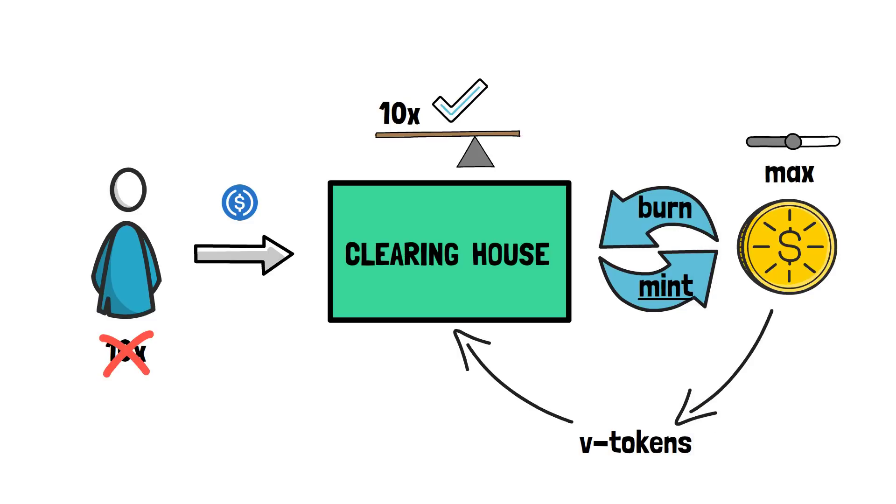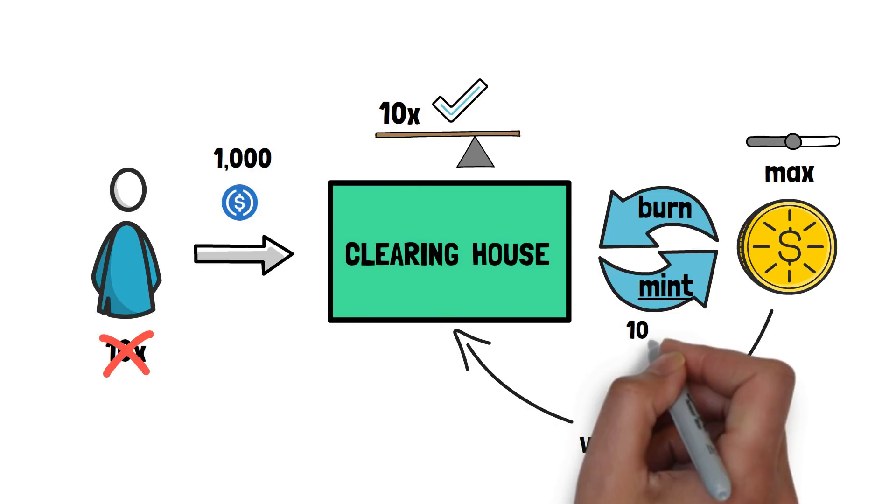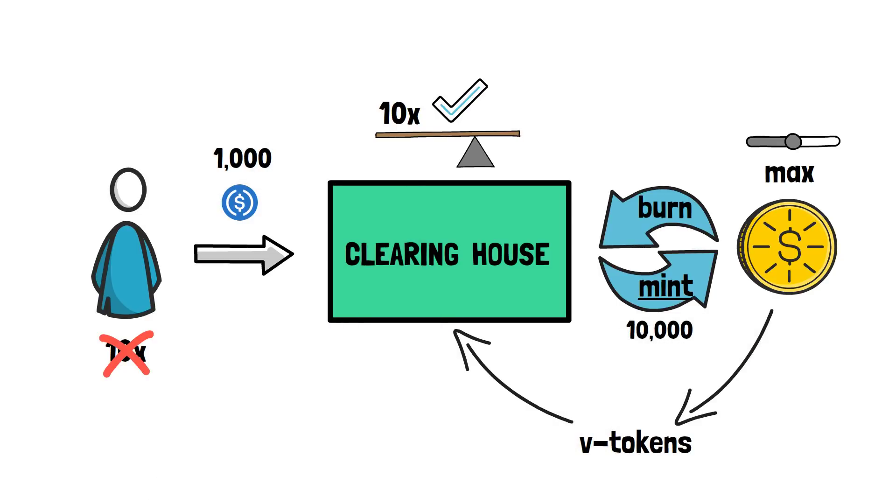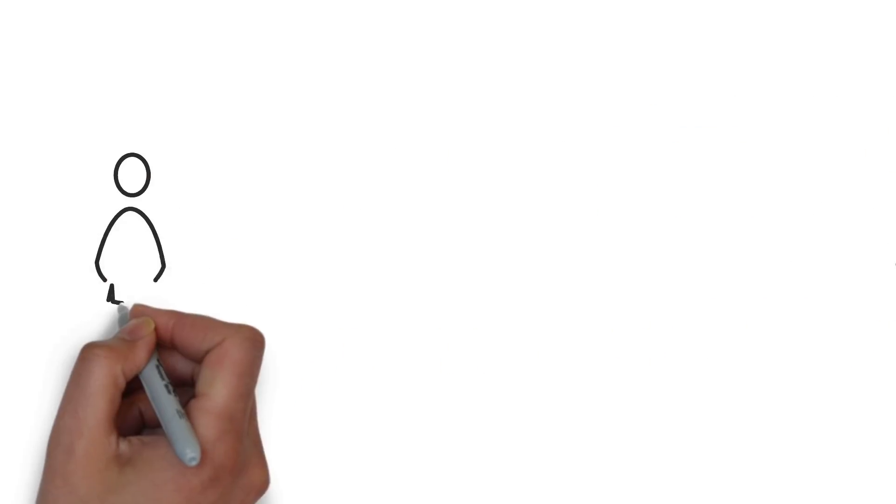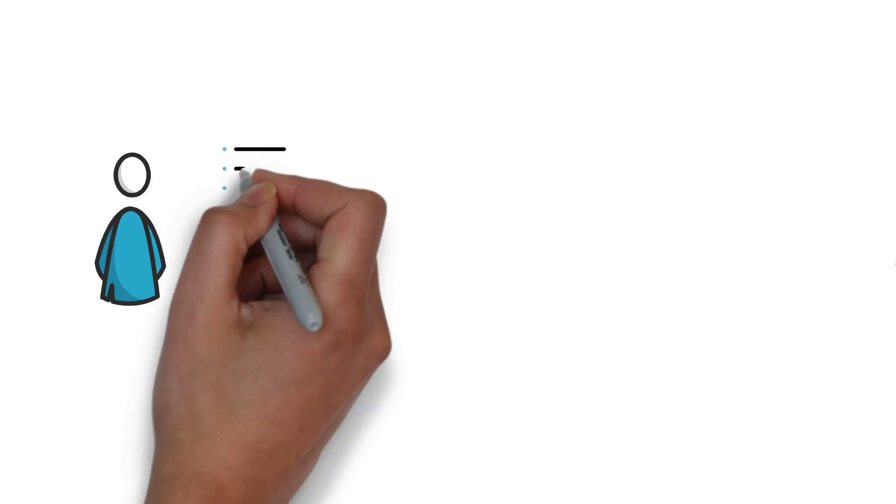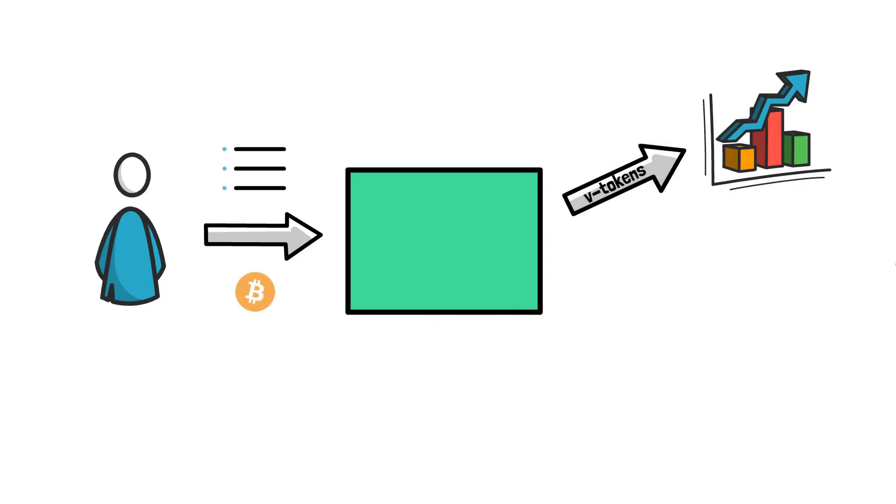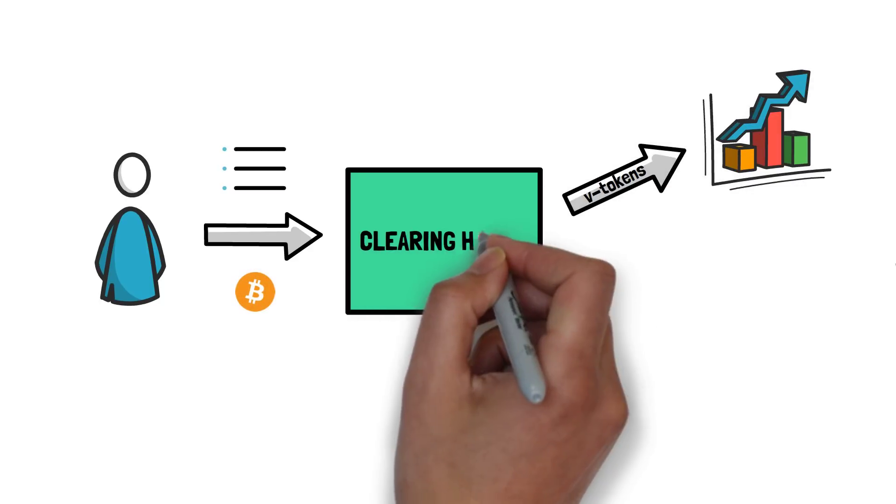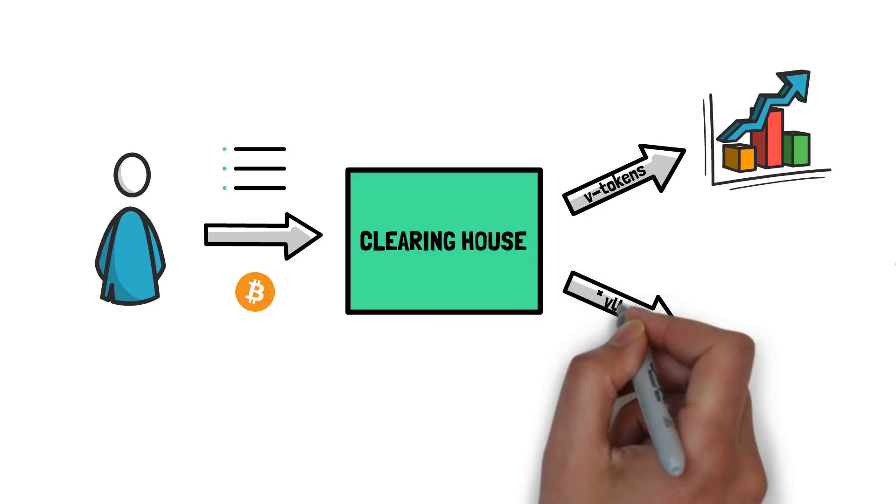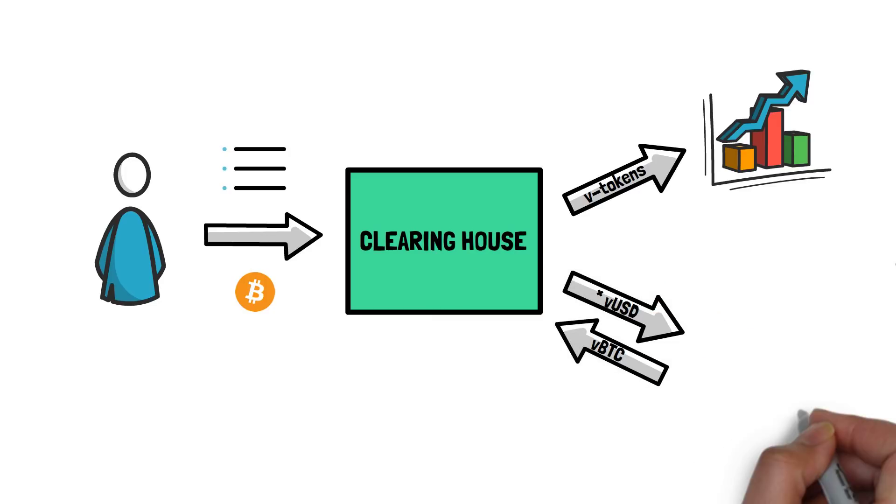As an example, if the user decides to deposit 1000 USDC, the protocol would issue 10,000 V tokens, in this case VUSDC. To create a particular position, the user can select the product they want to trade and use V tokens to enter the position. For example, if the user wants to go long on BTC, they can instruct the Clearinghouse to trade their VUSDC tokens for VBTC. In this case, the protocol would use a Uniswap V3 VUSD VBTC pool.